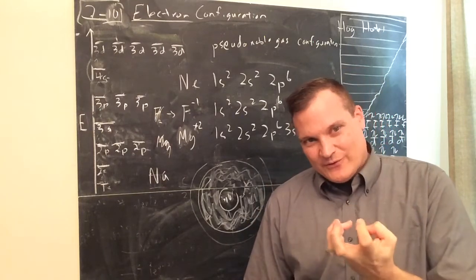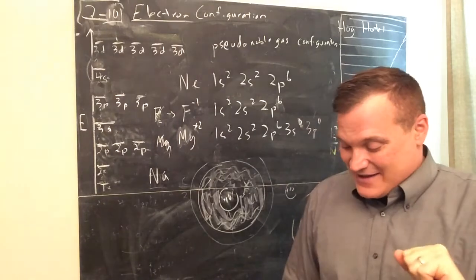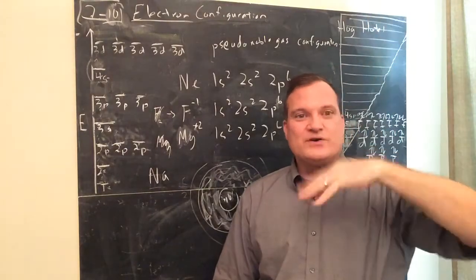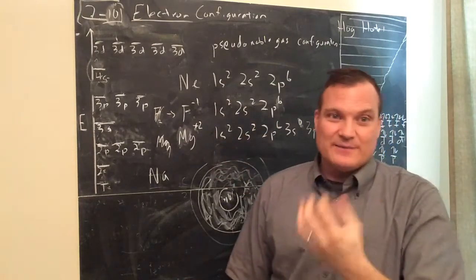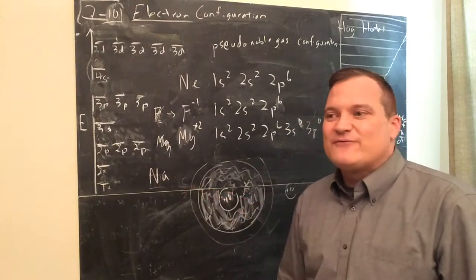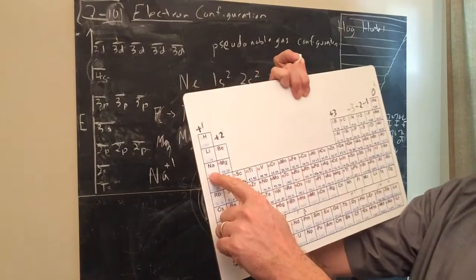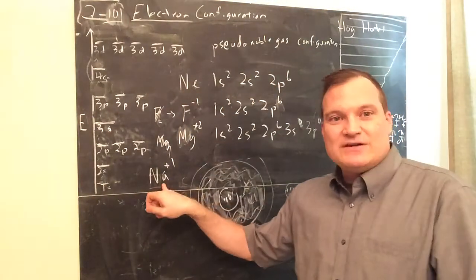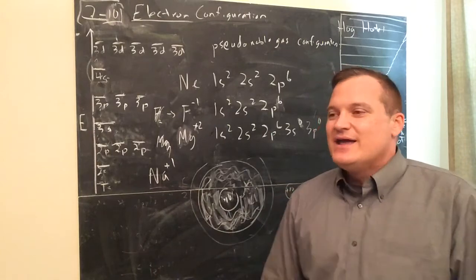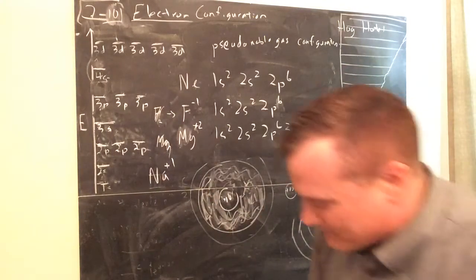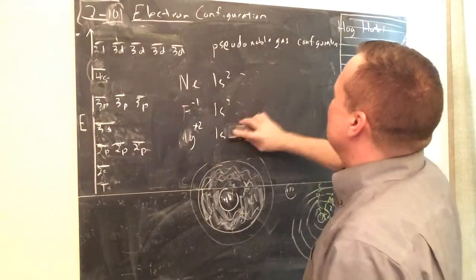Sodium metal looks kind of like silver Play-Doh. If you cover it with baby oil or mineral oil, the oil keeps moisture away and protects it from reacting. But sodium ion — Na⁺ — you have every single day; your nervous system needs it. Na is 3s¹; it loses one electron and becomes like neon. Once you have sodium ion, you can eat it — it's in table salt, it's safe.